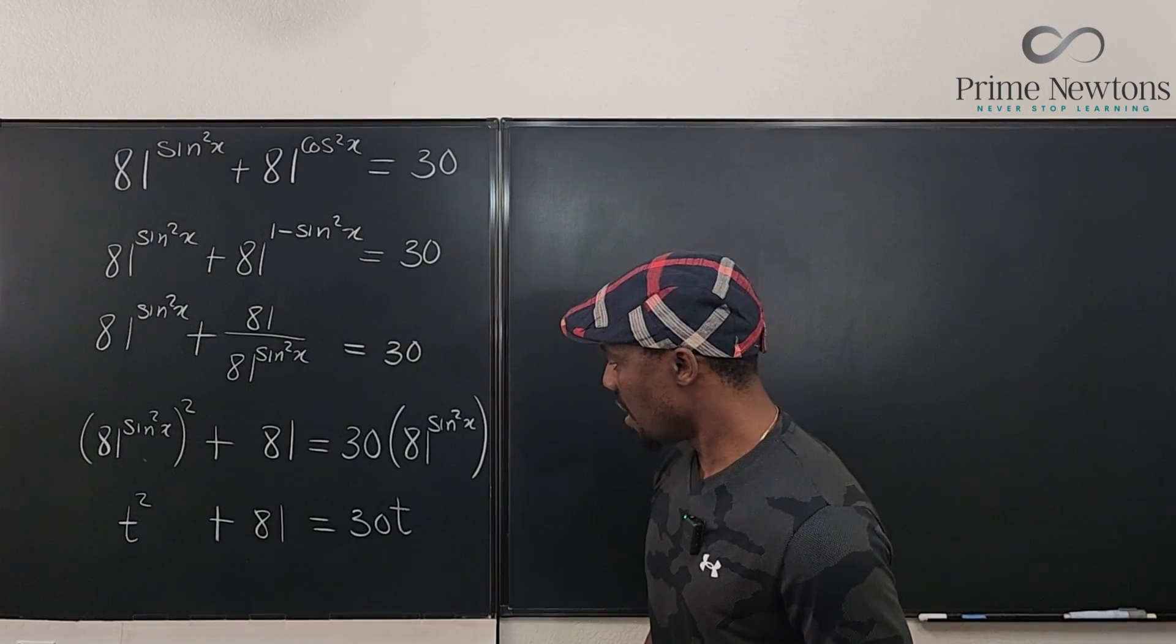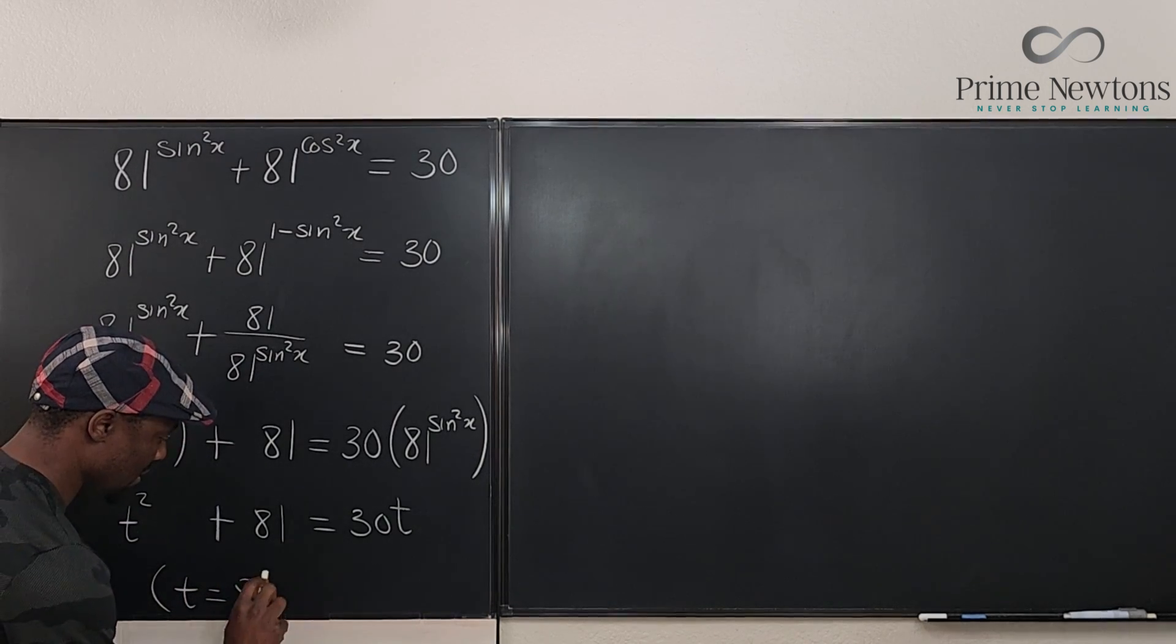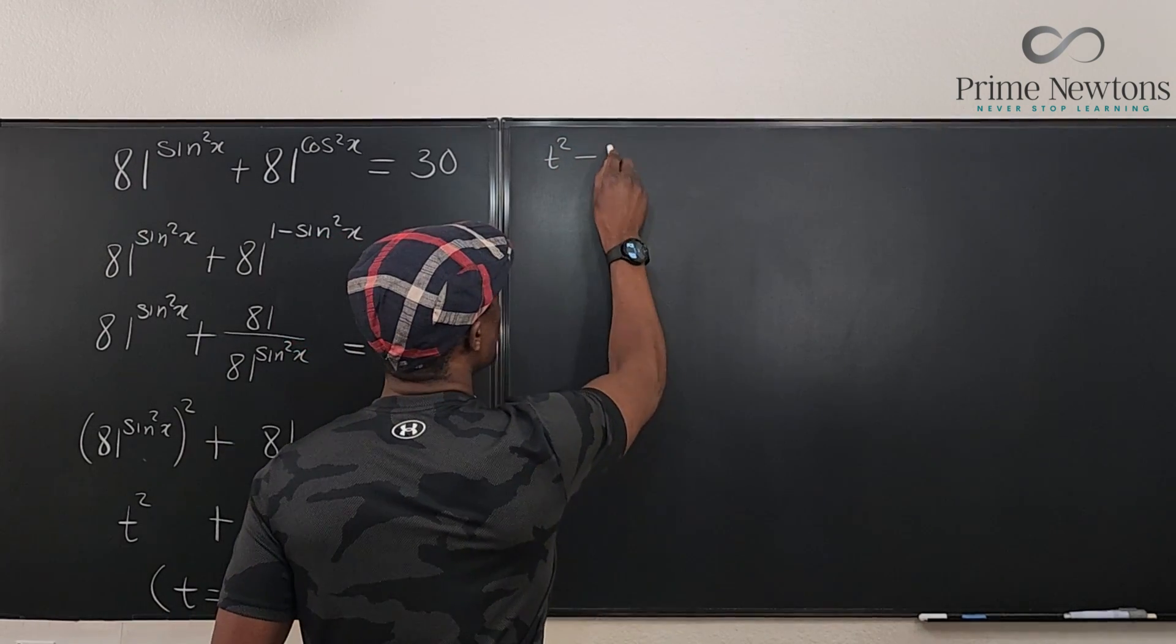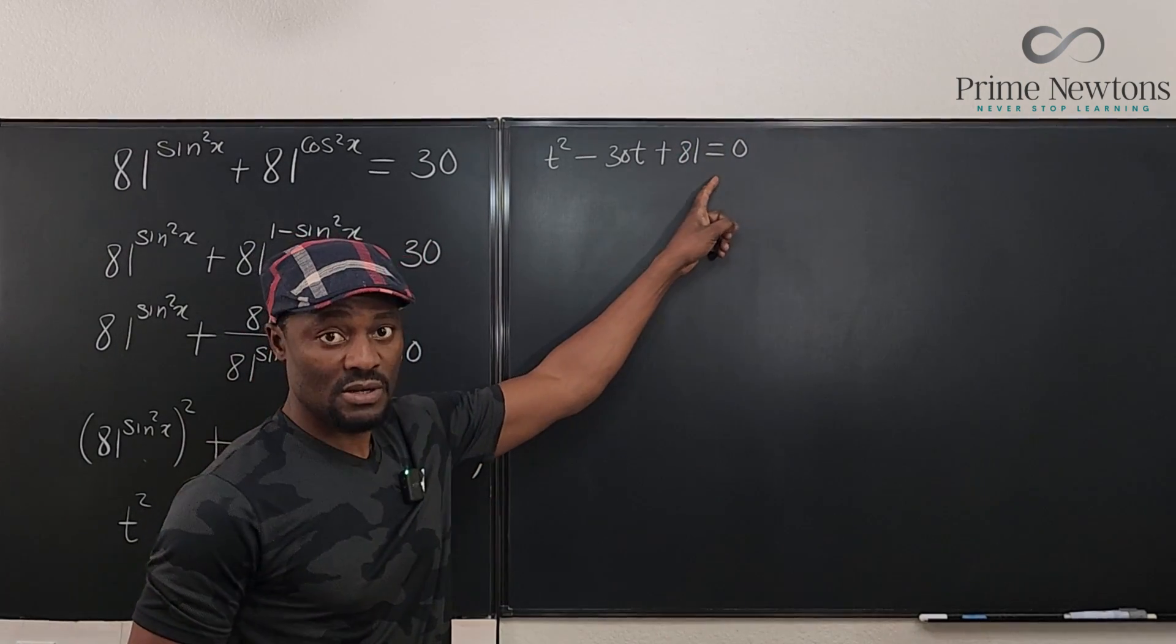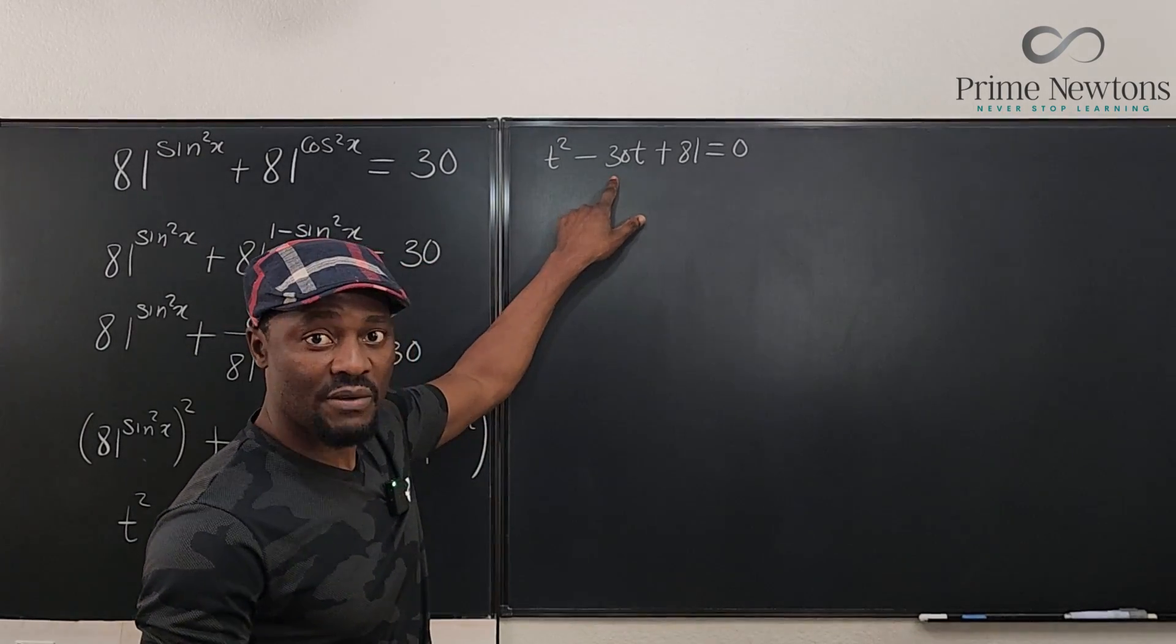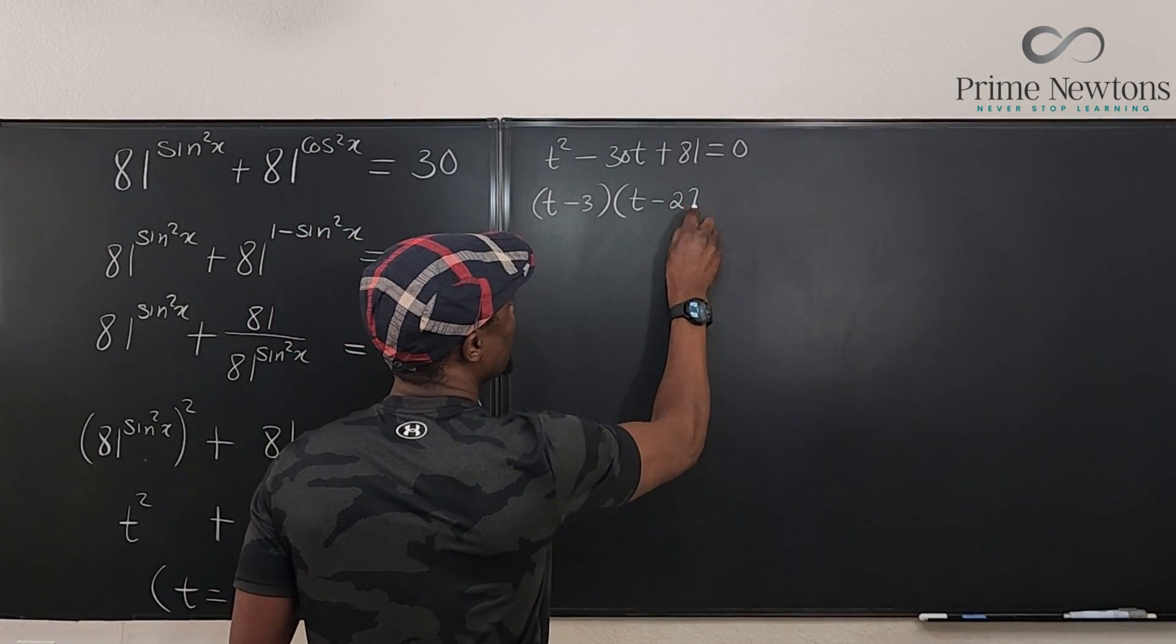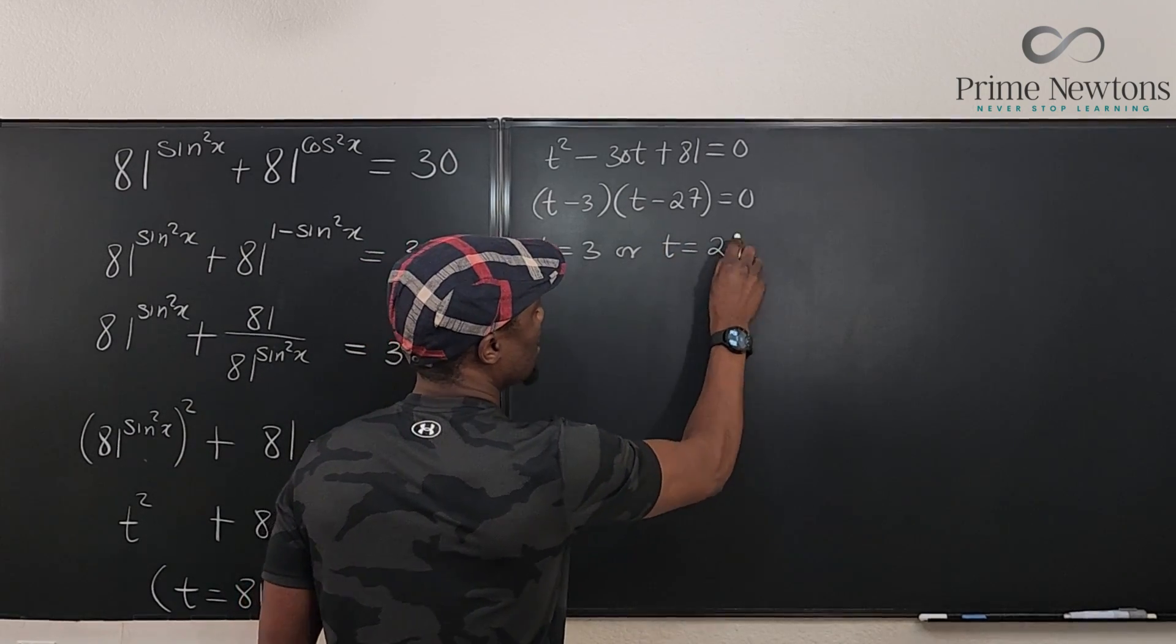So what we're going to do is, remember the assumption we have here. Let's put it here. We say that t is equal to 81 to sine squared x. That's our assumption. So let's solve this quadratic equation. We can move this here and say that t squared minus 30t plus 81 is equal to 0. Can this be factored? Yes. If you factor this, I'm not going to spend time explaining how to factor. This is going to be t minus 3. This can be broken down into 3 and 27, because if you multiply 3 and 27, you get 81. So this is going to be t minus 3 times t minus 27 is equal to 0. And so we have t equals 3 or t equals 27.